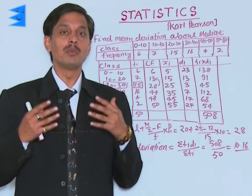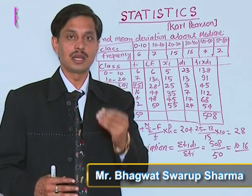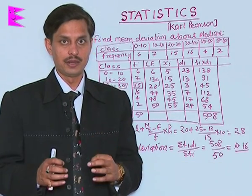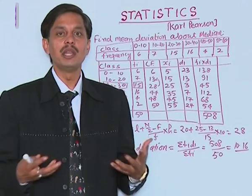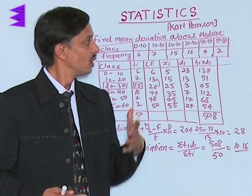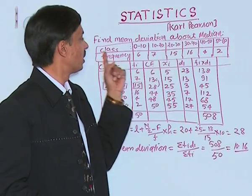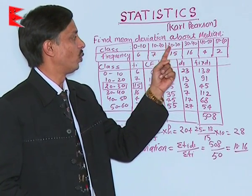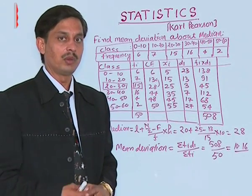Now, I want to explain you one more problem where the data is given in class size and mean deviation about the median is required. The question is find mean deviation about median. Classes are 0 to 10, 10 to 20, 20 to 30, 30 to 40, 40 to 50, and 50 to 60.